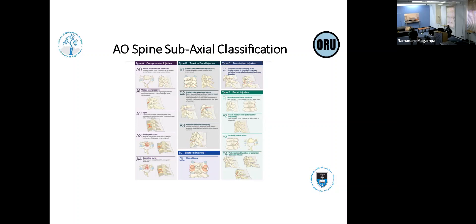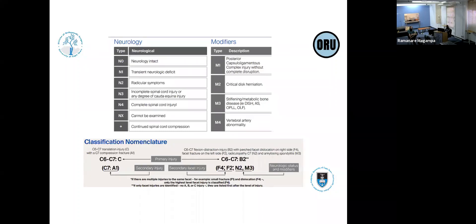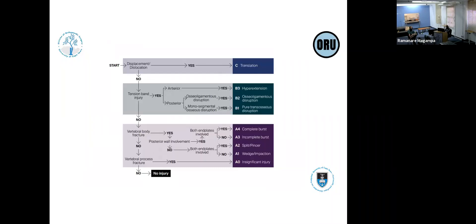At your level you should be able to look up the classification, recognize it, and use it when making a phone call. If you tell someone you've got a Type B2 sub-axial spine injury, no one is going to ask any more questions — just send it across. The AO algorithm helps: Is there displacement or dislocation? Yes → Type C. Is there tension band injury? Yes → Type B, anterior or posterior → B2 or B3. Just a vertebral body fracture → A1-A4. Process fracture → A0.